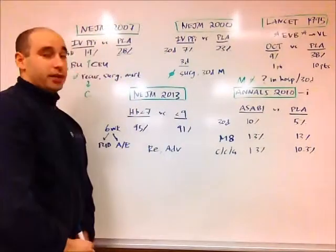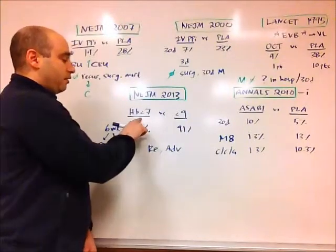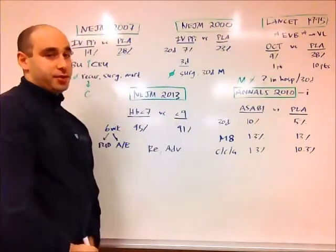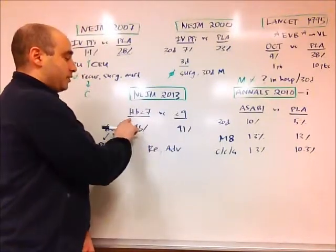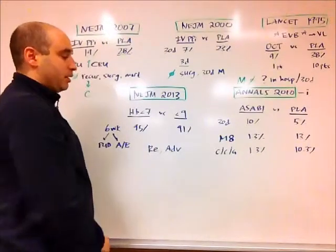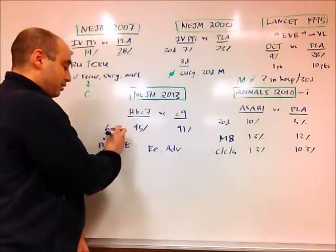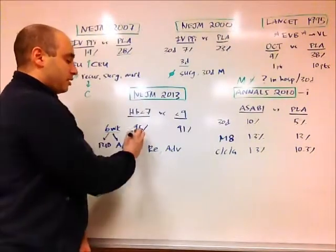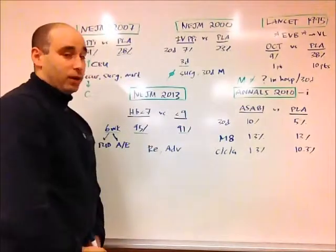Next, we're going to take a look at a New England Journal paper from 2013, and this looked at whether a conservative versus liberal transfusion strategy in upper GI bleeding was more effective. The conservative transfusion strategy only transfused if the hemoglobin went less than 7, whereas the liberal strategy transfused if it went less than 9. When they looked at the two groups at 6 weeks, they found that more patients in the conservative transfusion group were alive, 95% compared to 91%.